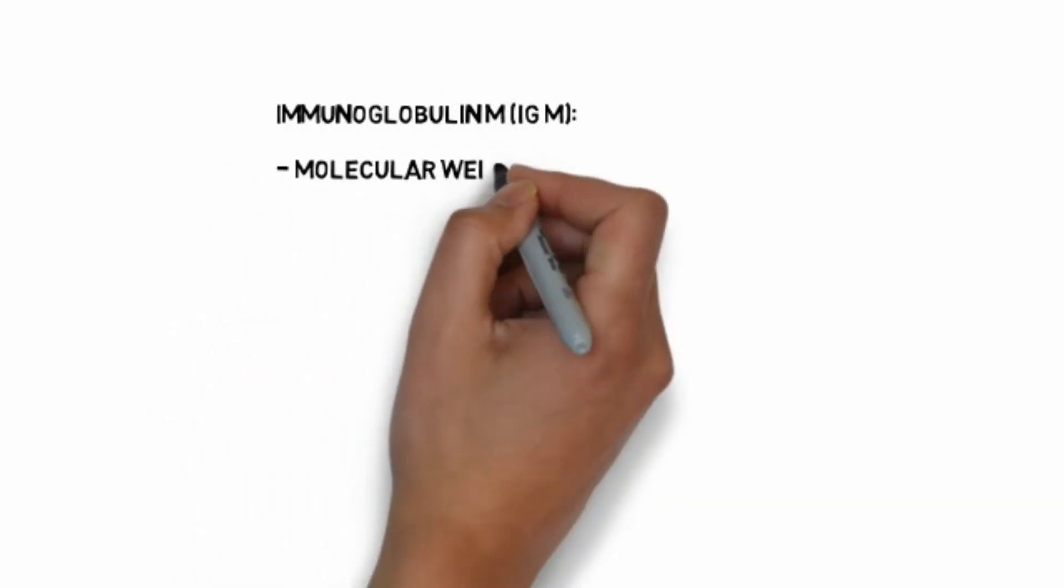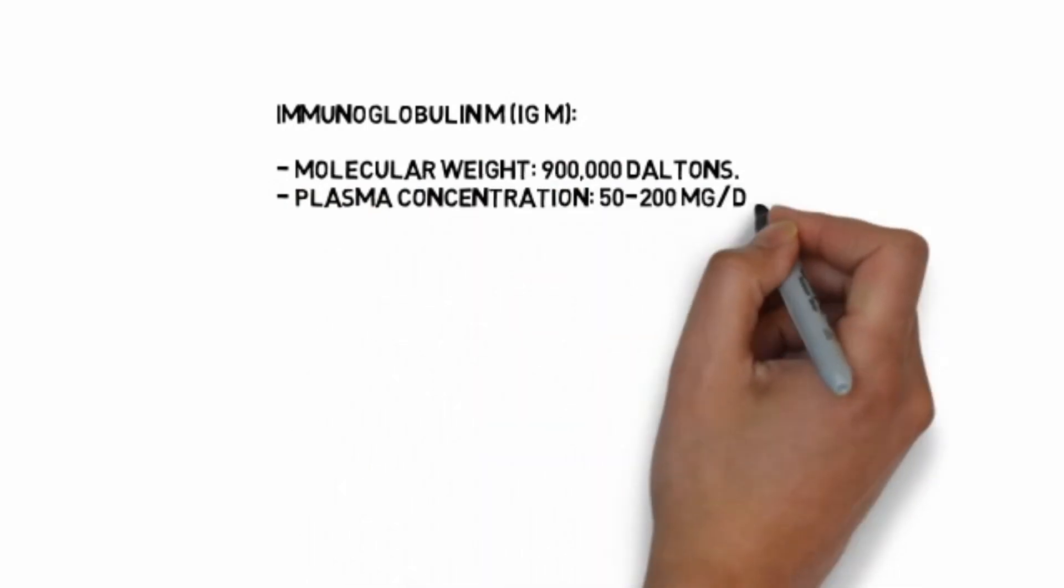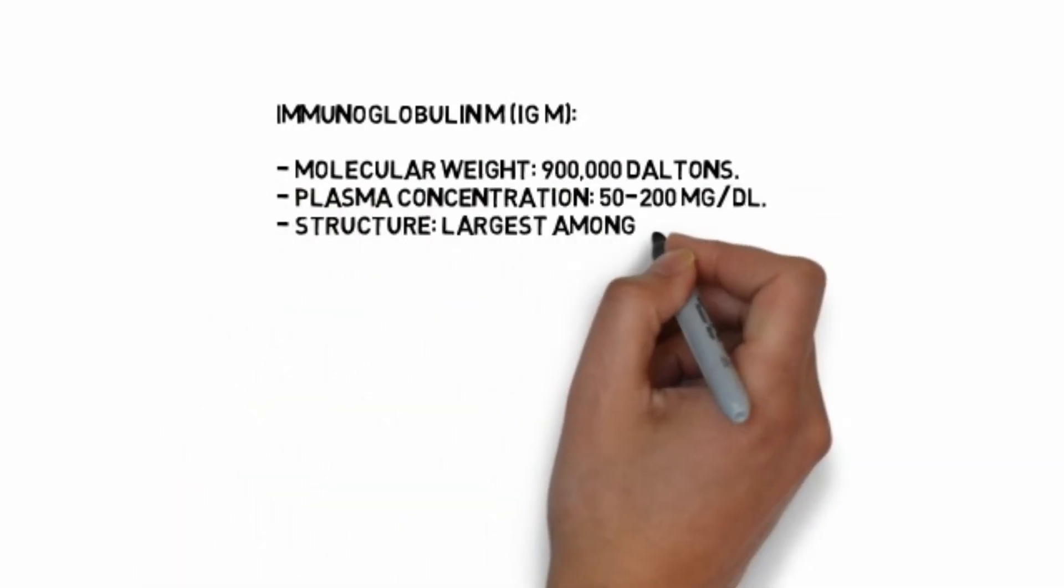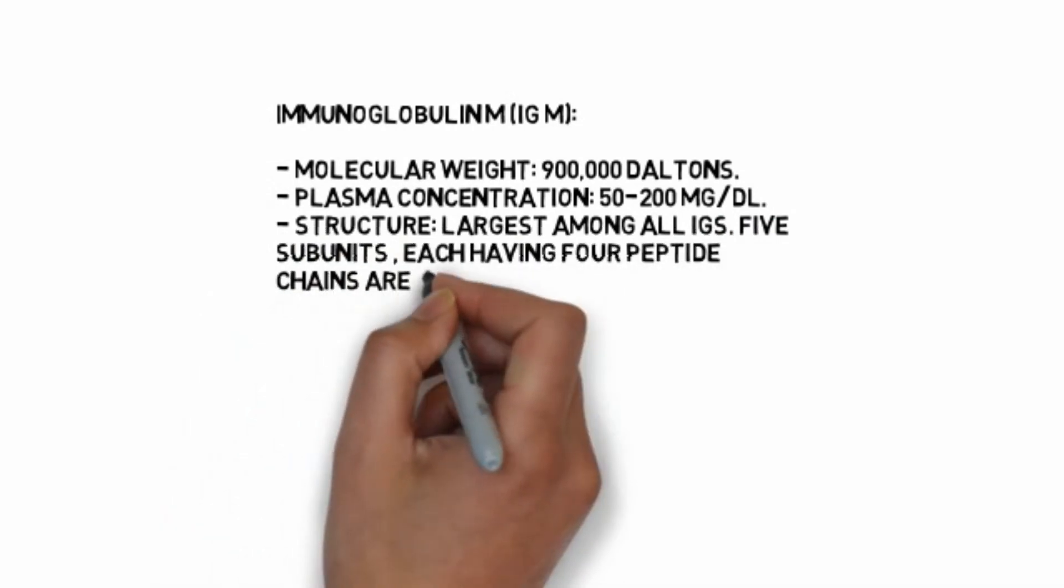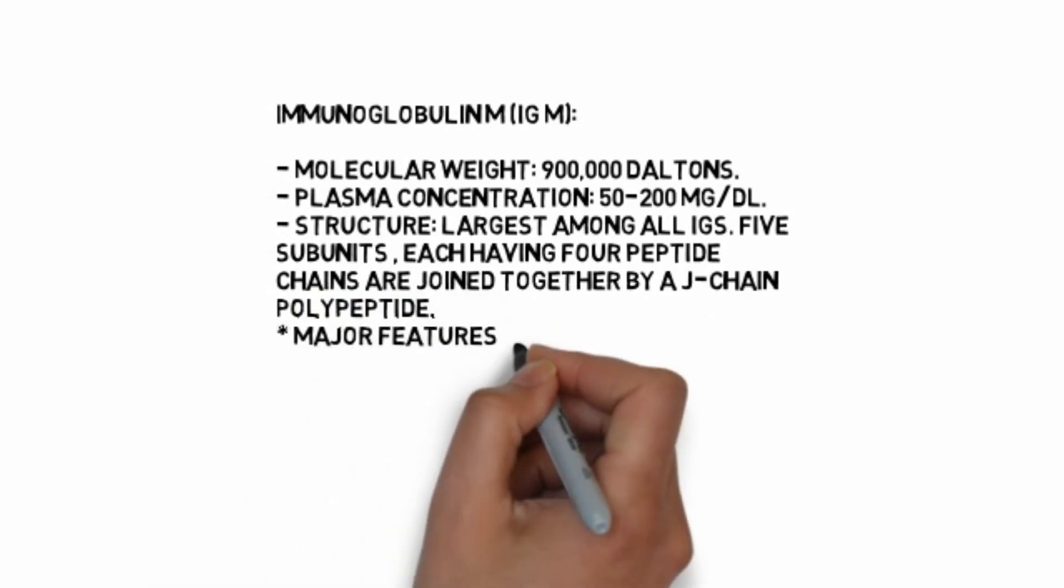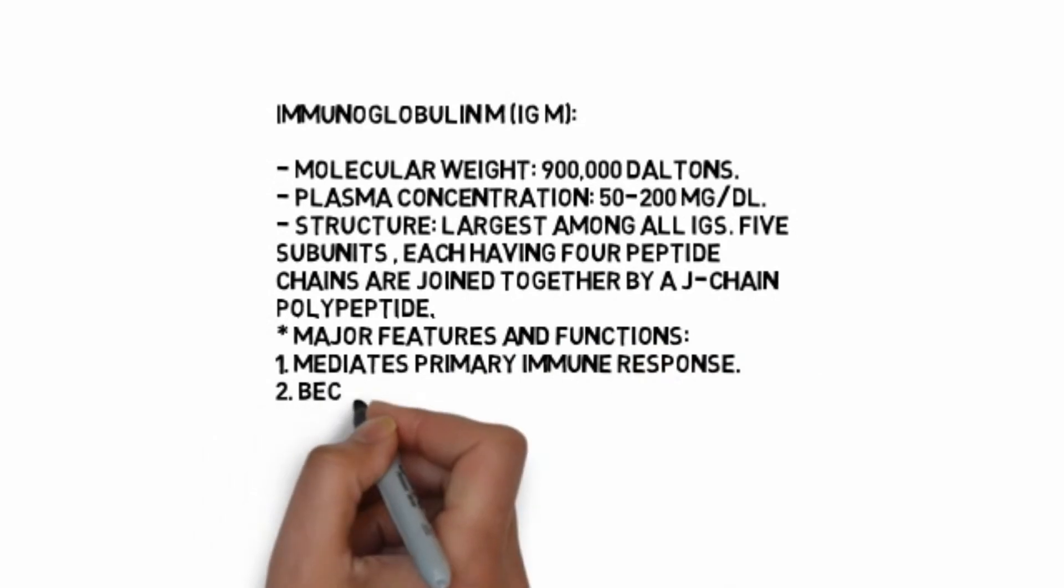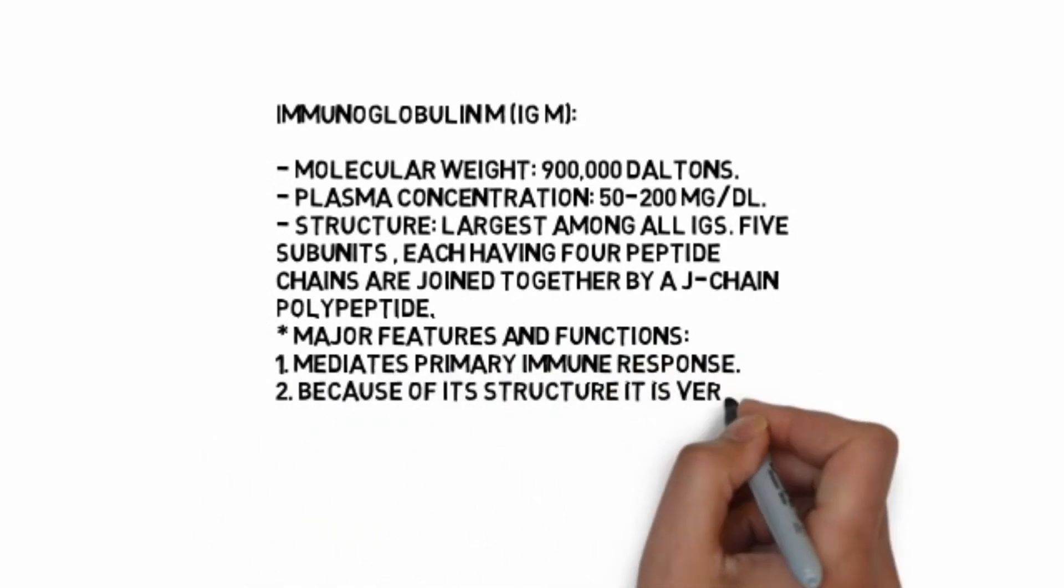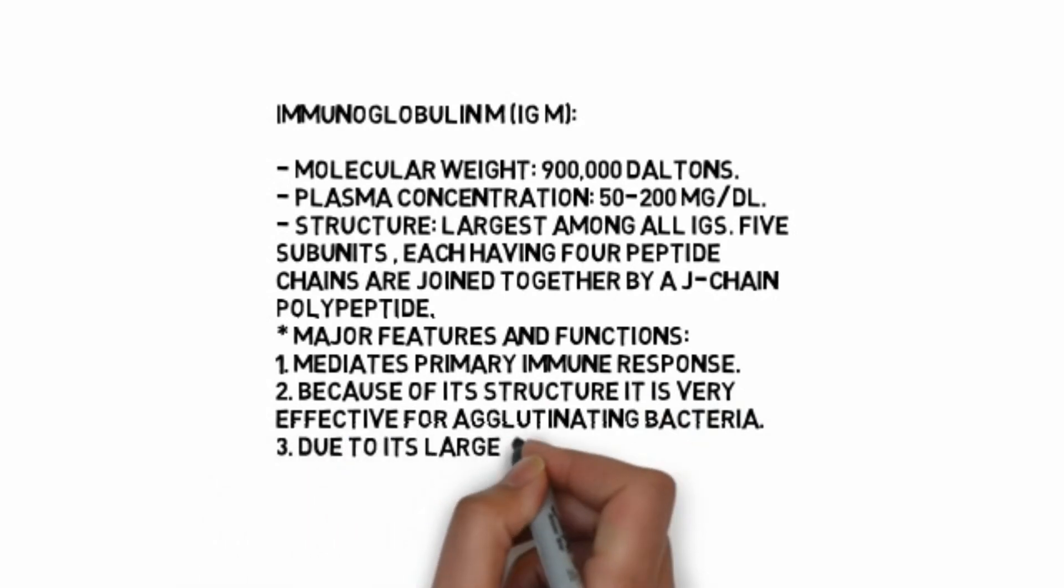Immunoglobulin IgM: molecular weight 900,000 daltons, plasma concentration 50 to 200 mg per deciliter. Structure: largest among all Igs. Five subunits, each having four peptide chains, are joined together by J chain polypeptide. Major features and functions: mediates primary immune response. Because of its structure, it is very efficient for agglutinating bacteria. Due to its large size, it cannot escape out of the vascular compartment.